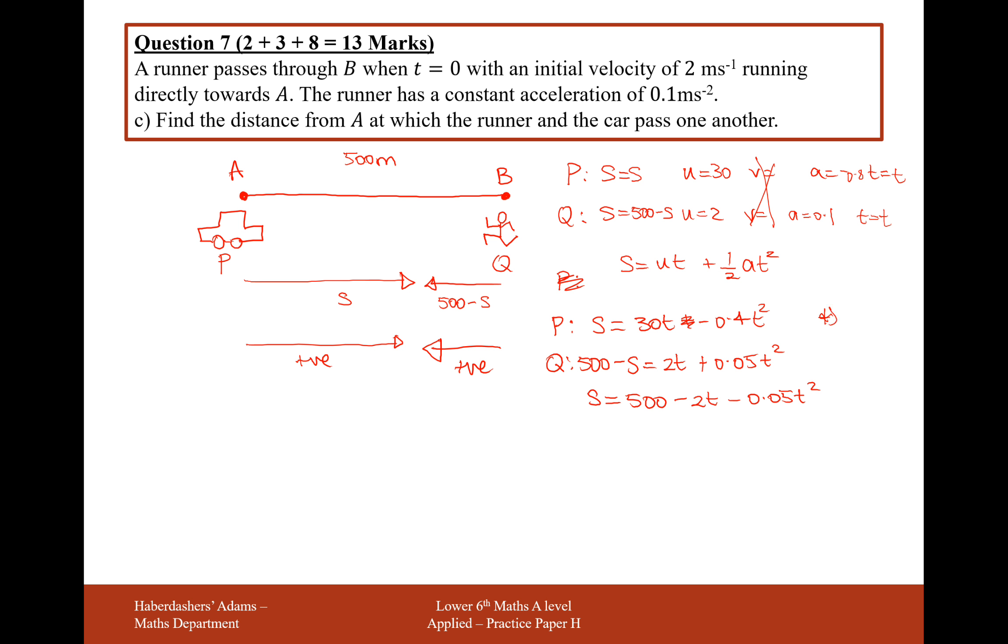Now we have two simultaneous equations where S is the subject in both formulas. I've just added S onto the other side and taken these two bits across. If S is equal in this case, then we can set the two equations equal to each other: 30T minus 0.4T squared equals 500 minus 2T minus 0.05T squared. Thinking sensibly about which side we want our variables on, I'll add everything onto the right-hand side. Add 0.4T squared onto the right, we get 0.35T squared. Take away 30T onto the side and we'll get minus 32T, plus 500.